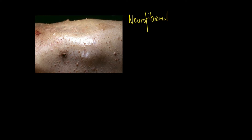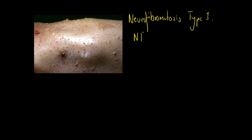Café au lait spots are often harmless, but they can be associated with some medical conditions. One condition they're commonly associated with is neurofibromatosis type 1, which I'll refer to as NF1. NF1 is a genetic condition which causes tumors to grow along your nerves. Here you can see the torso of someone with NF1, and here is a café au lait spot which I'm outlining in red.